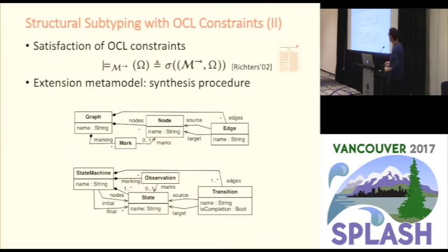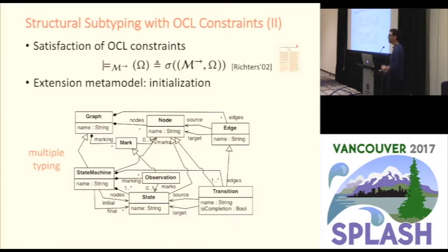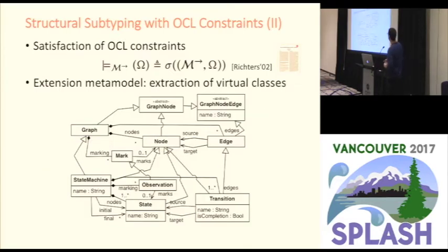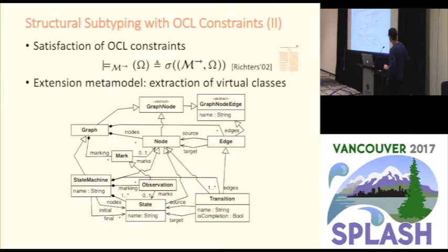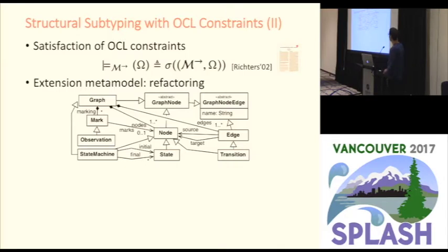Given two metamodels — the intended supertype and the intended subtype — we use the subtyping relation to infer the structural subtypings. Then, for each pair of classes in the supertype metamodel, we apply a procedure that extracts virtual classes for ensuring the diamond property, so that a feature is only defined once in the supertype. We still have duplicate features in the subtype, so the next step is to refactor the extension metamodel to avoid those duplicates.